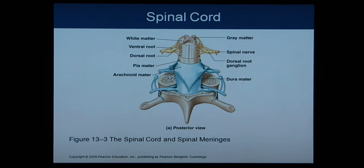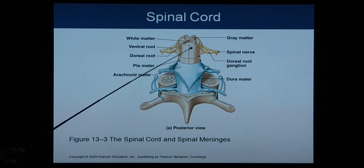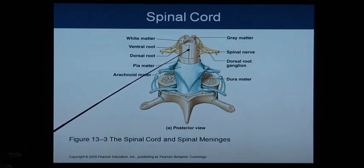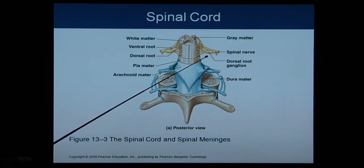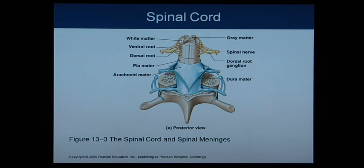Here we have a vertebra, and on the inside opening we've got the spinal cord with gray matter and white matter surrounding it. Coming out of it we have the spinal nerves, and you can see this enlarged area — that represents the dorsal root ganglion, an accumulation of cell bodies.